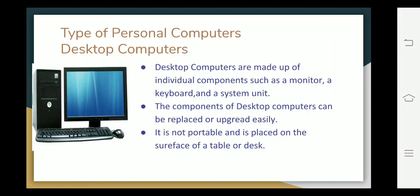Desktop computers are made up of individual components such as a monitor, a keyboard, and a system unit. The components of desktop computers can be replaced or upgraded easily — for example, if the mouse is not working, you can change it easily. However, it is not portable and is placed on the surface of a table or desk.